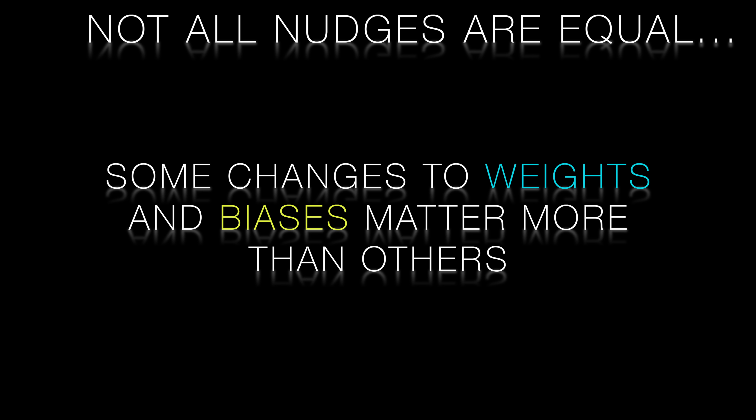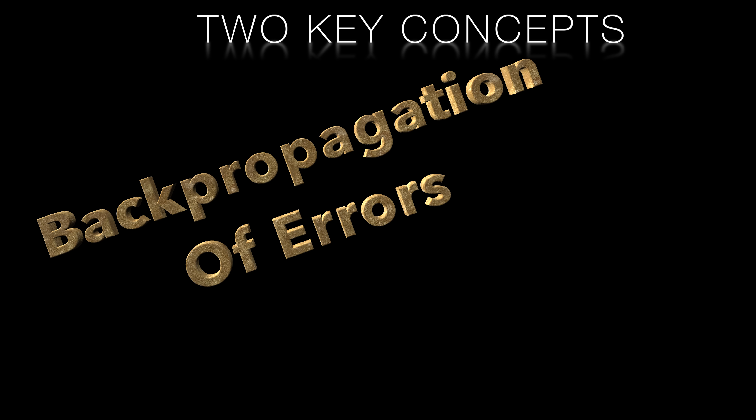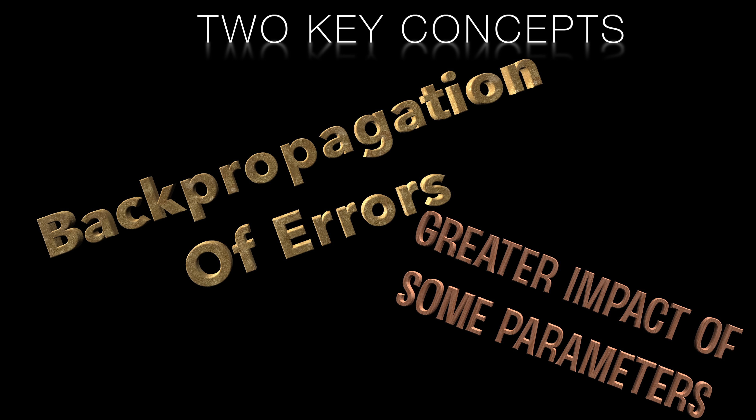The other thing to keep in mind is that not all nudges and tweaks to weights and biases are created equal. Weights are multiplied by activations, so even a large change to a weight connected to a neuron with a low activation will have little overall effect. Similarly, a large change in upstream weights and biases for a neuron connected by a zero or very low weight will have very little impact. This will give us an intuition about what the backpropagation algorithm is doing.